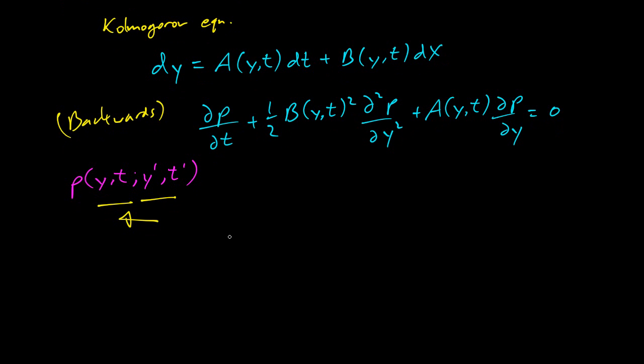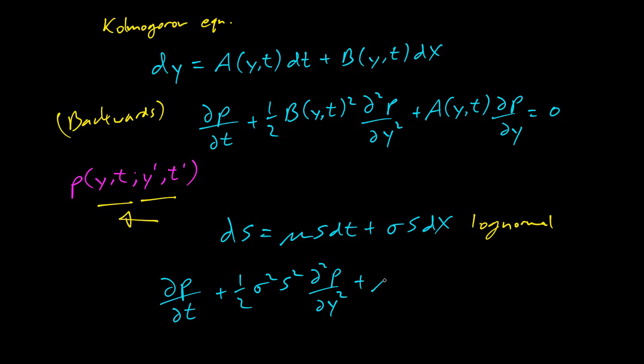If we have some particular behavior, let's do the regular log-normal: dS is mu S dt plus sigma S dX, nothing surprising, just log-normal. Then how does p work? Let's do the backwards equation here. We get partial of p with respect to t plus a half, then b squared - so b is this part - sigma squared S squared, the second partial, plus a, partial of p respect to y equals zero.